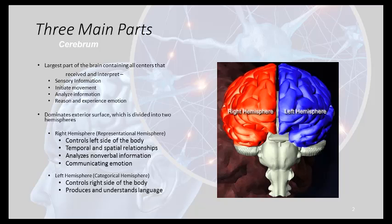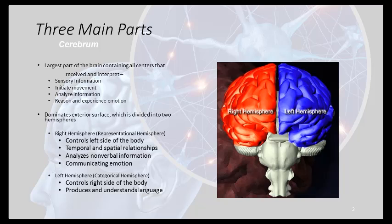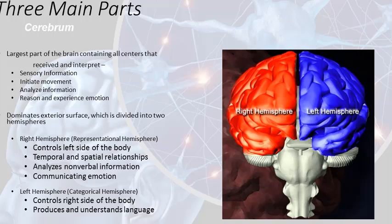The largest part of the brain is the cerebrum. It is where all of the different sensory information is received and interpreted. All of our movements are initiated because of this part of the brain. We analyze information, reason, experience emotion, have consciousness, will, volition, set goals — all of the things that make human life possible are centered mostly in the cerebrum.